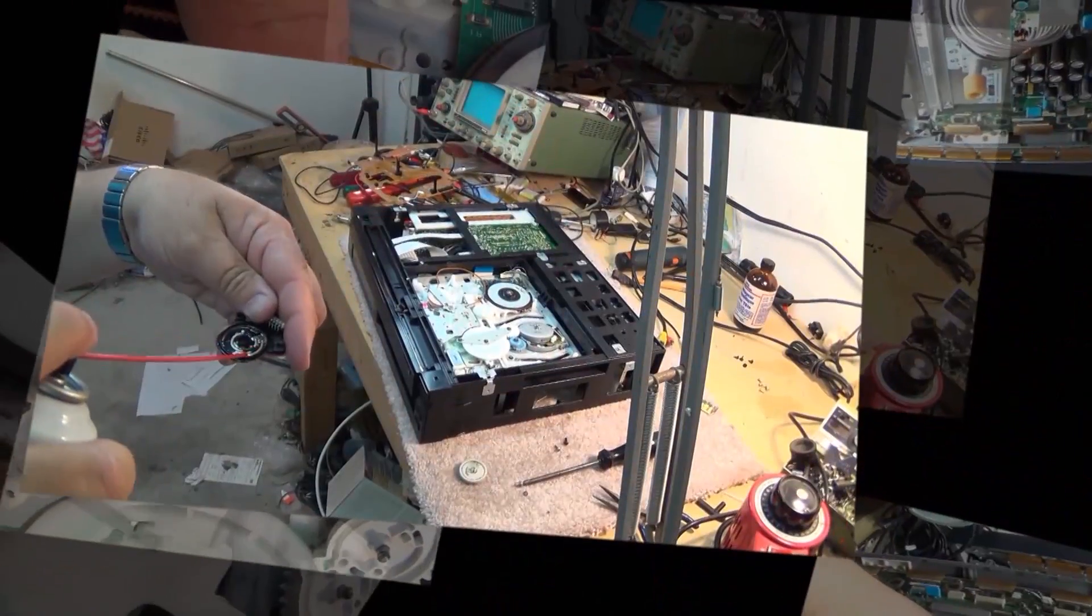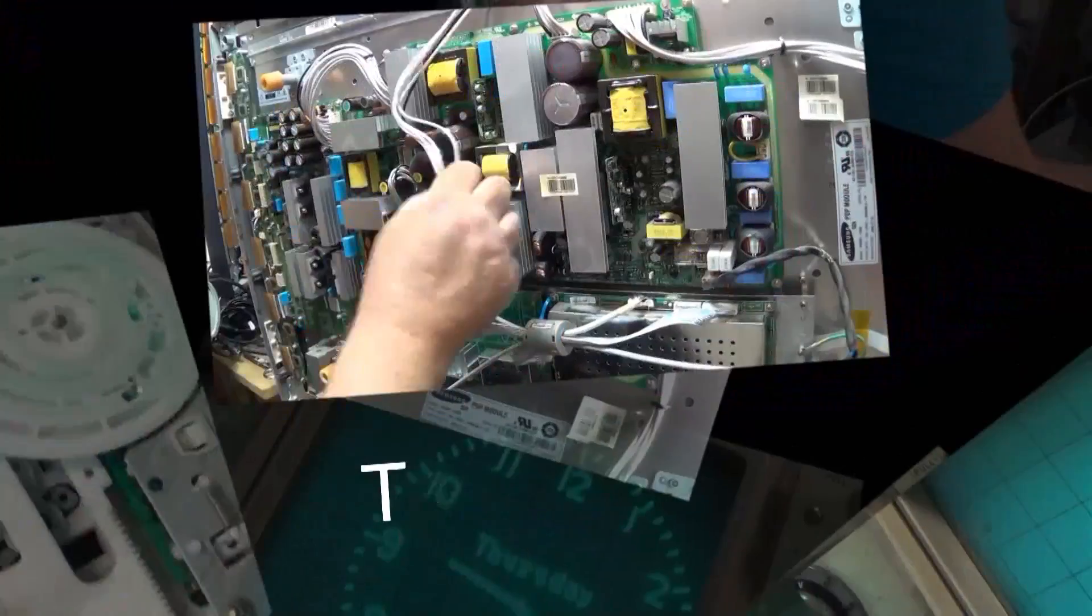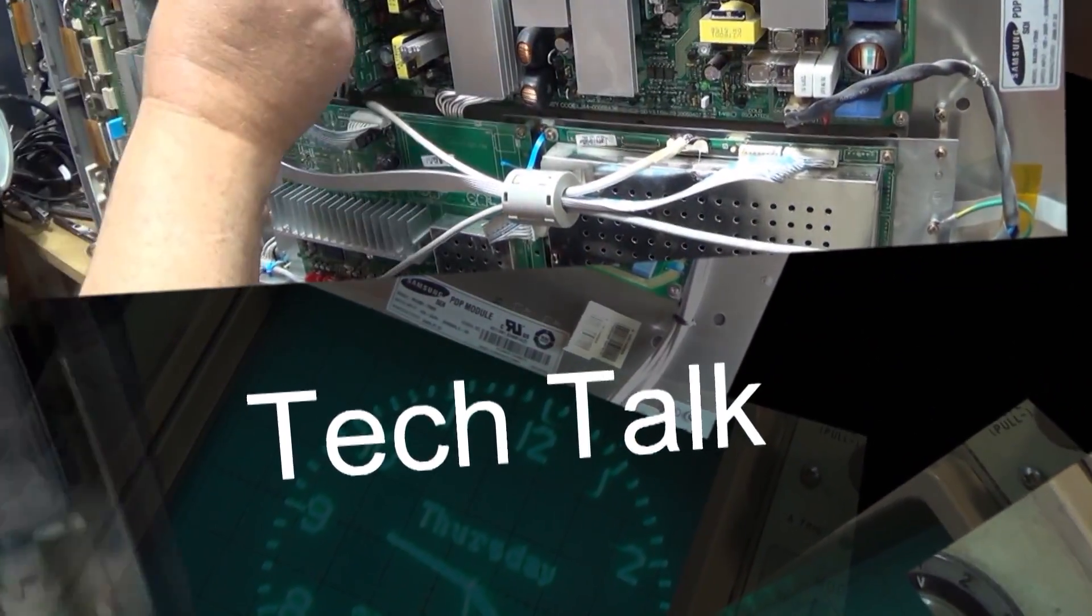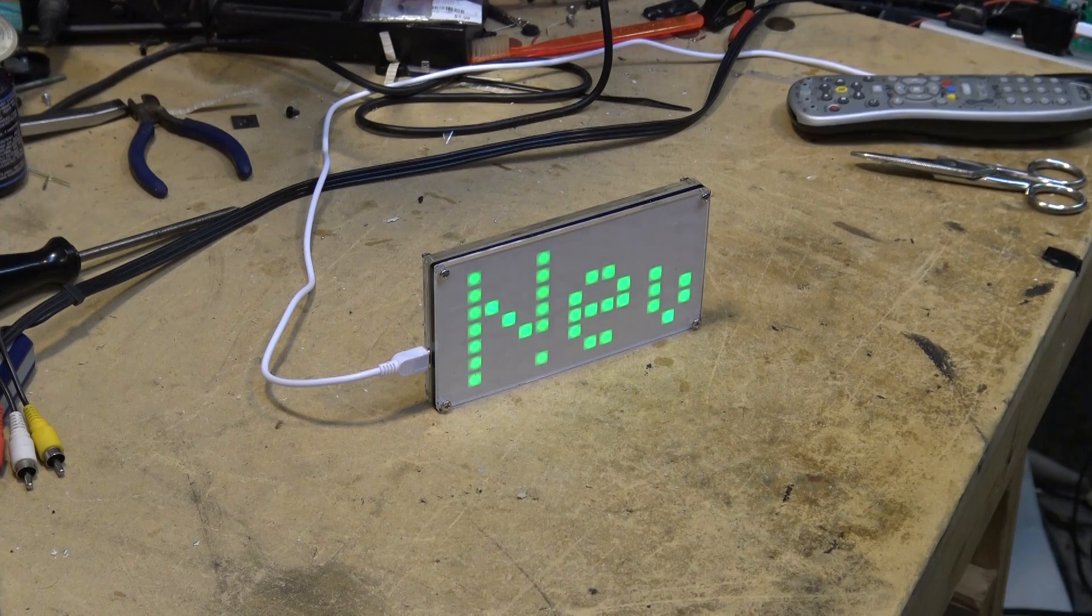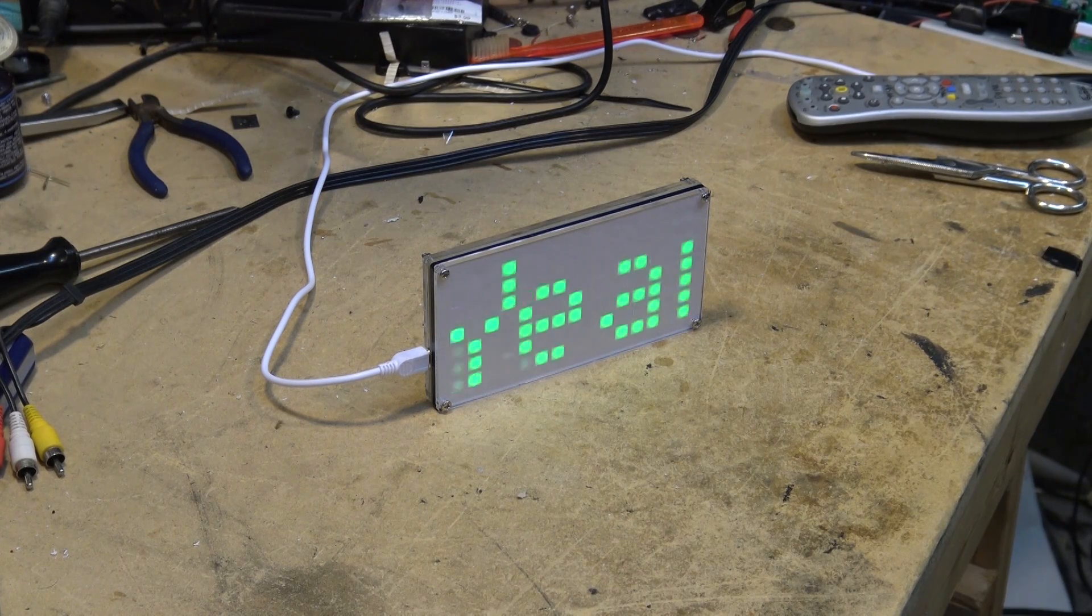After a few days of operation, my dot matrix clock that I assembled last week seems to have developed a problem with the display. Let's take it apart and see what's wrong. We've seen that there's a couple of LEDs that have gone out on this thing.